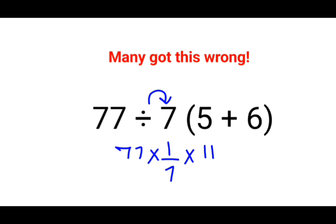Please understand that a lot of people thought that this is nothing but 77 divided by 7 into 5 plus 6, that is 77. And that is why they thought the answer is 1, which is absolutely wrong.